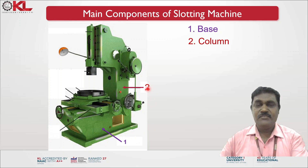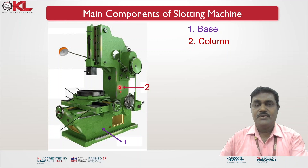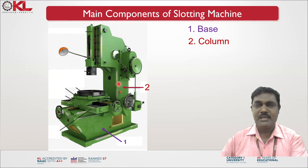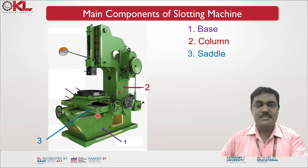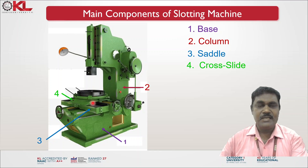The second one is the column. This entire portion is the column, which is mounted on the base, and this column incorporates the driving mechanisms. The third one is the saddle. The saddle is mounted on top of the base and is used for supporting the table and the cross slide. On top of the saddle you can provide the cross slide.